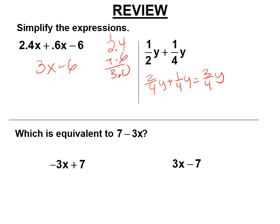Which is equivalent to 7 minus 3x? Well, you have a minus 3x, so you better have a negative 3x. So you have a positive 7, you better have a plus 7. It's this one that says both of them are wrong.